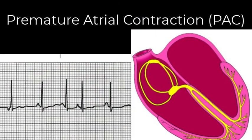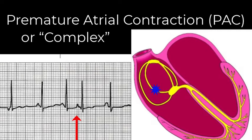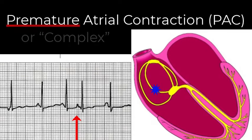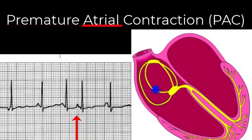One of the most common findings you will see on ECG tracings are premature atrial contractions, or premature atrial complexes — we label them as PACs. Complex is probably a more accurate term because we're seeing an electrical reflection, not the muscular contraction itself, but those terms are basically interchangeable. PACs occur early, before the next scheduled sinus beat, and they originate somewhere in the atria.